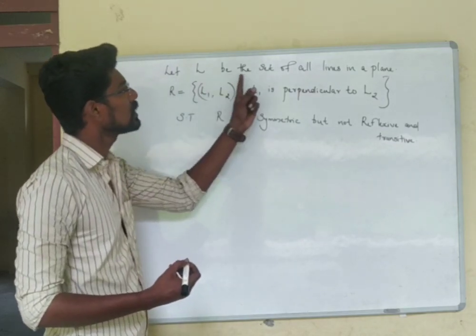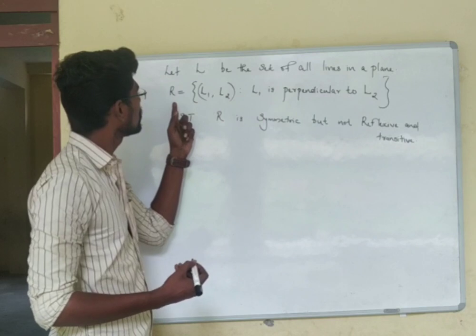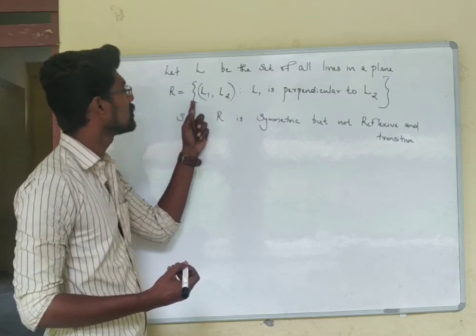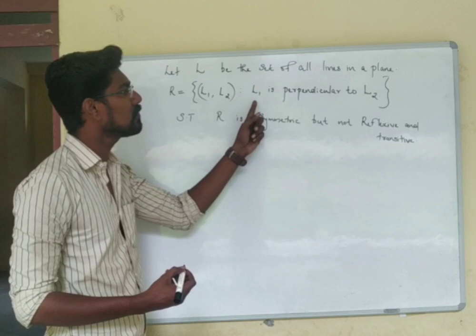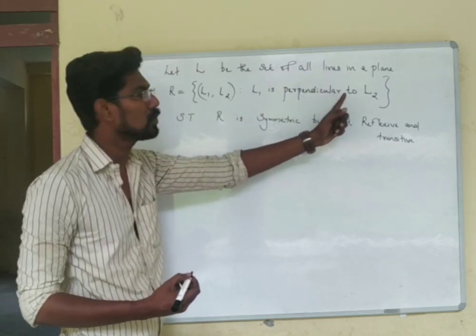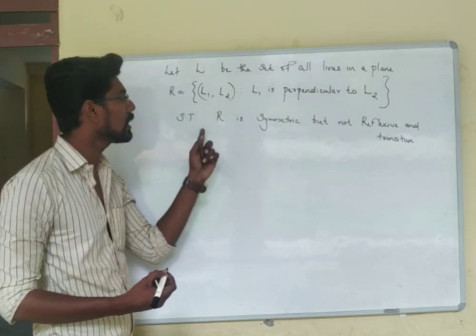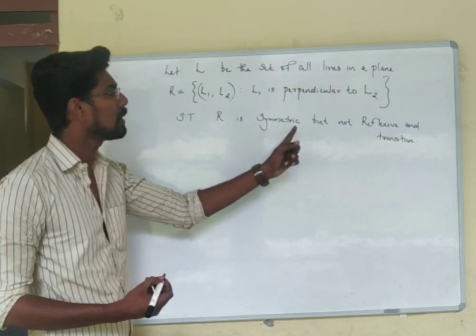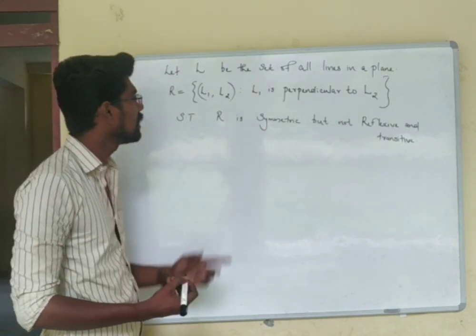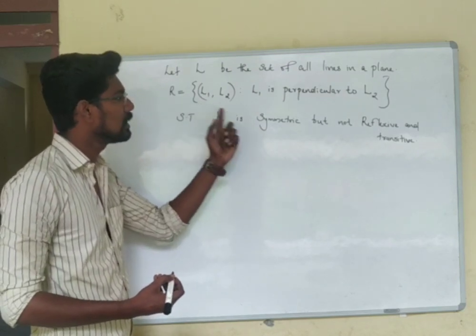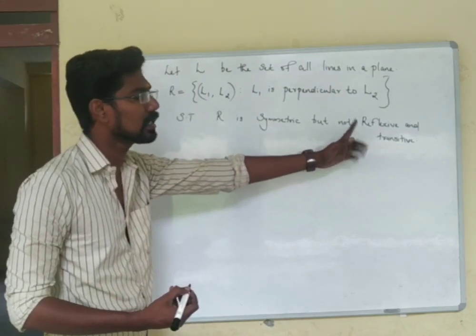Let L be the set of all lines in a plane. The relation R is defined as the set of all (L1, L2) such that L1 is perpendicular to L2. This relation shows that R is symmetric but not reflexive and transitive.